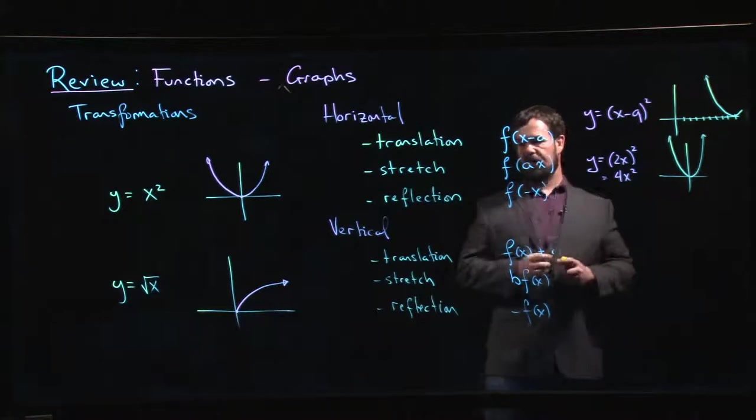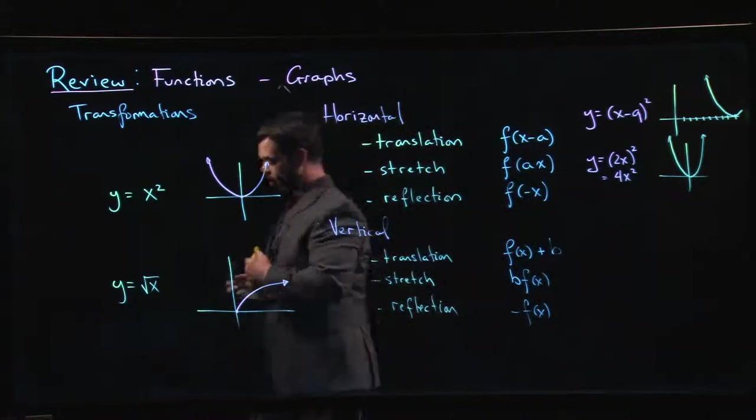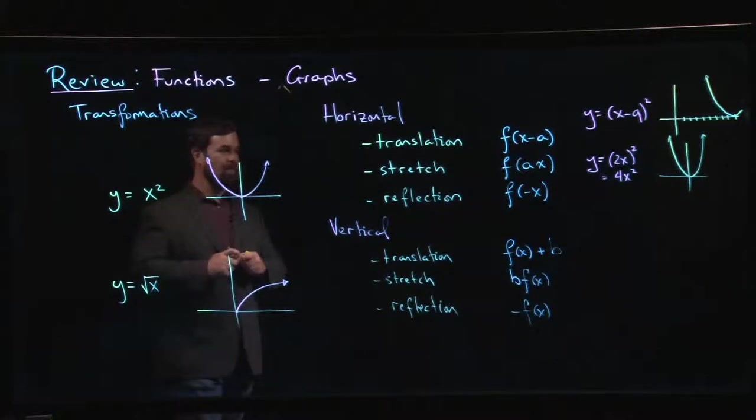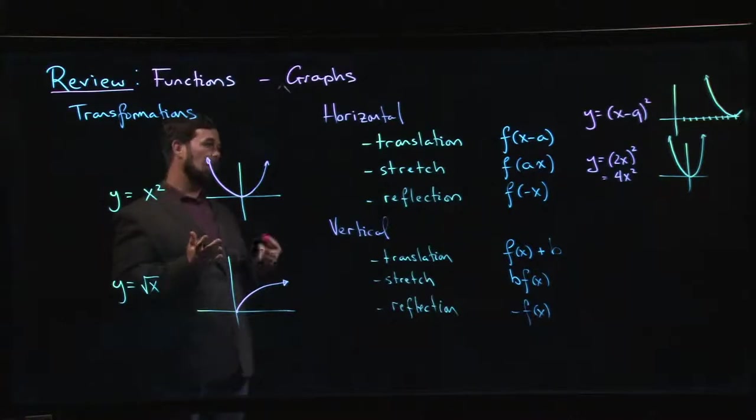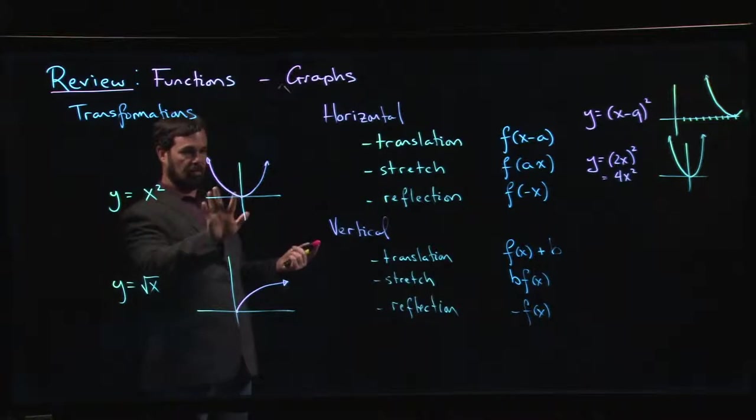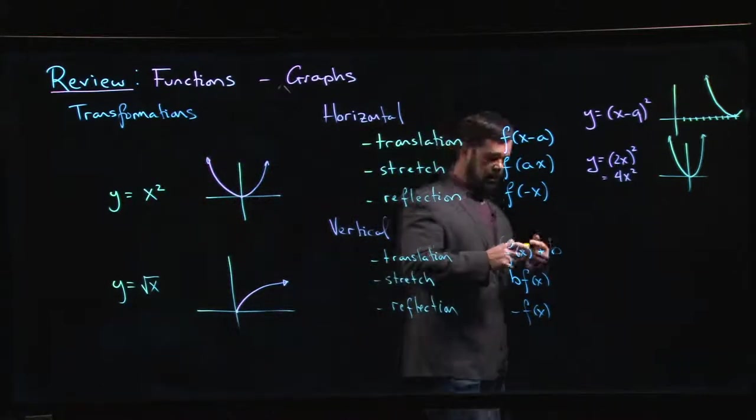Now if I do f(−x) for x squared, nothing happens, because you square minus x you get x squared. This happens to be an example of what's called an even function: f(−x) is the same as f(x). So you don't see any effect in this case from a horizontal reflection - reflecting across the y-axis, nothing happens.